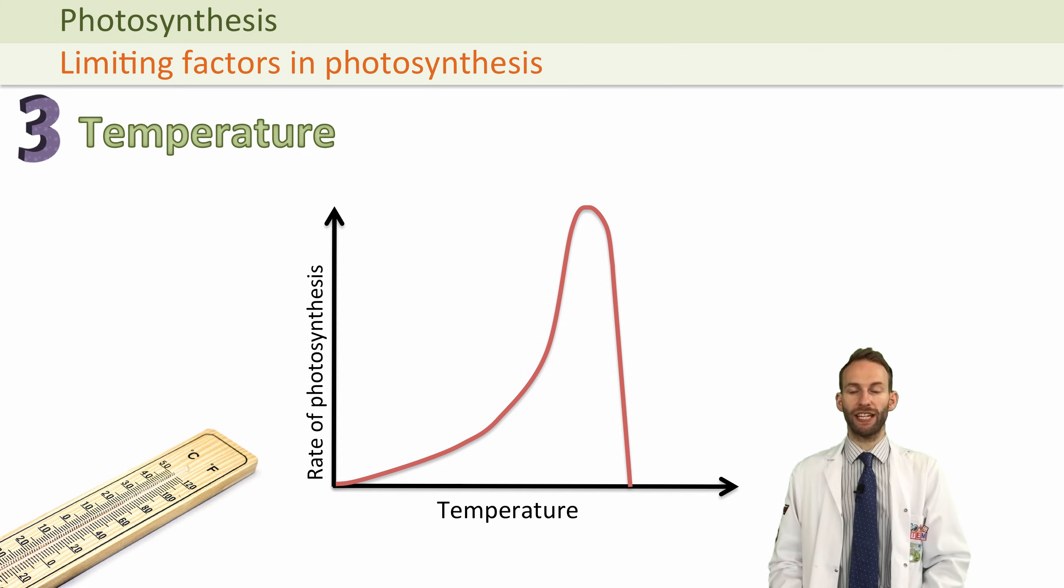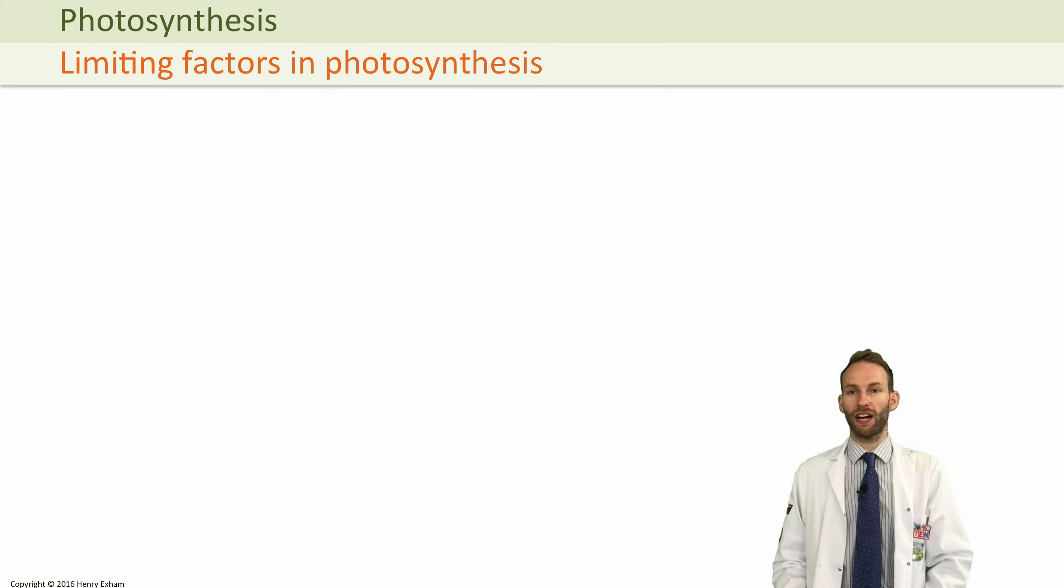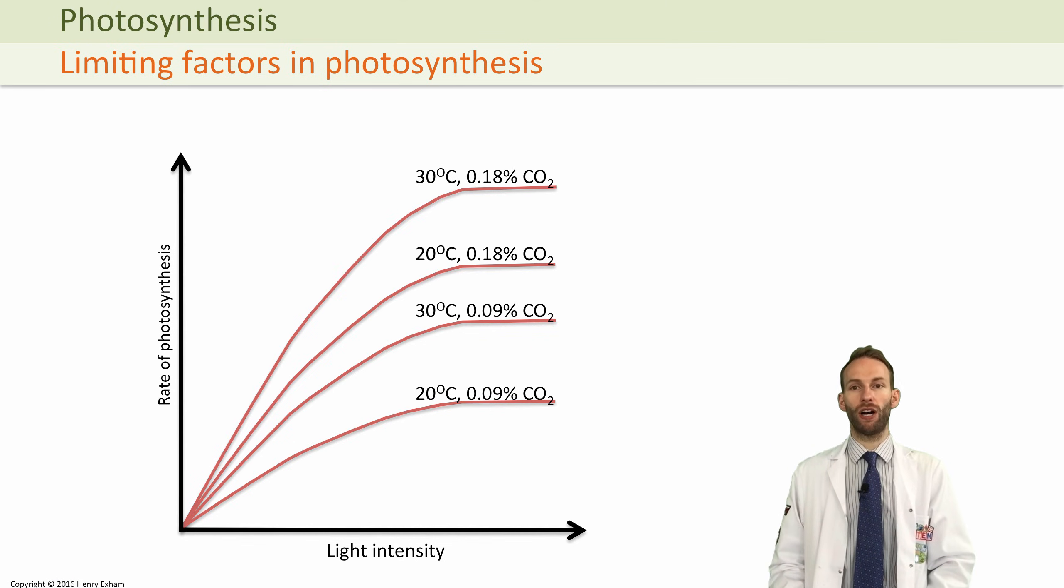If you look at this graph, you can see how these factors have an important role in the rate of photosynthesis. If we change the temperature by 10 degrees, we get a higher rate, but then something else will become a limiting factor and slow it down, probably carbon dioxide.